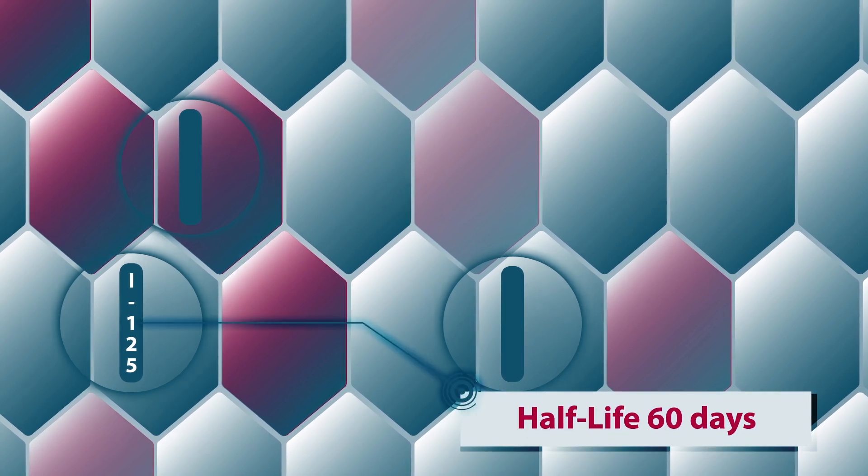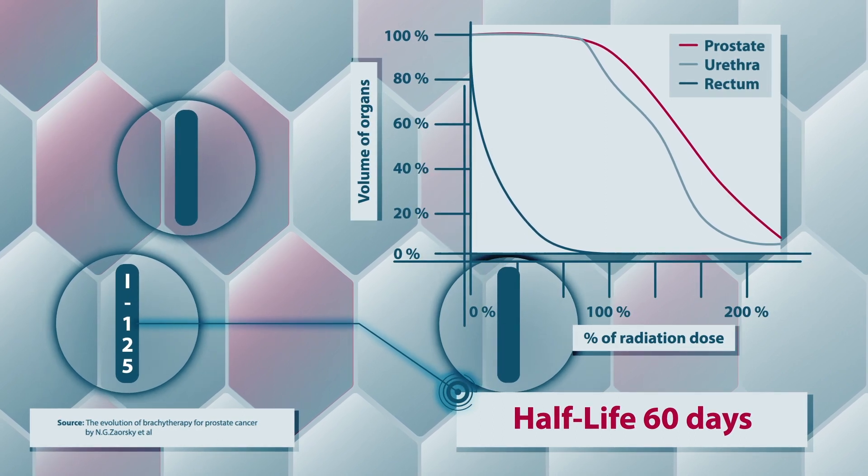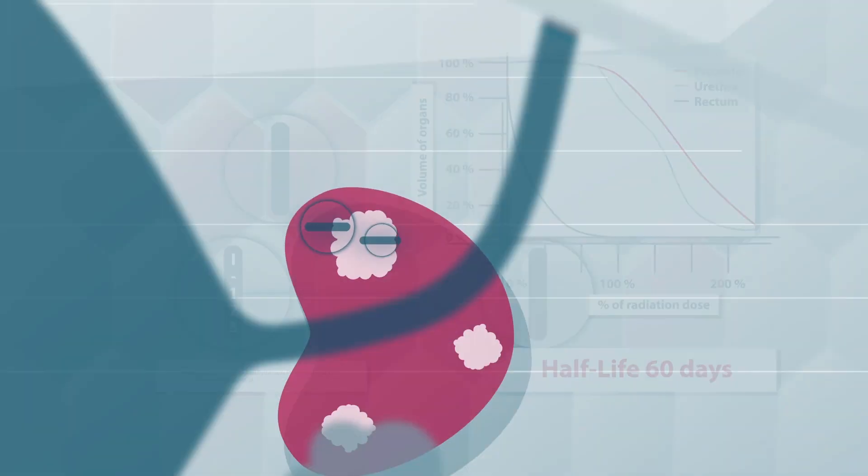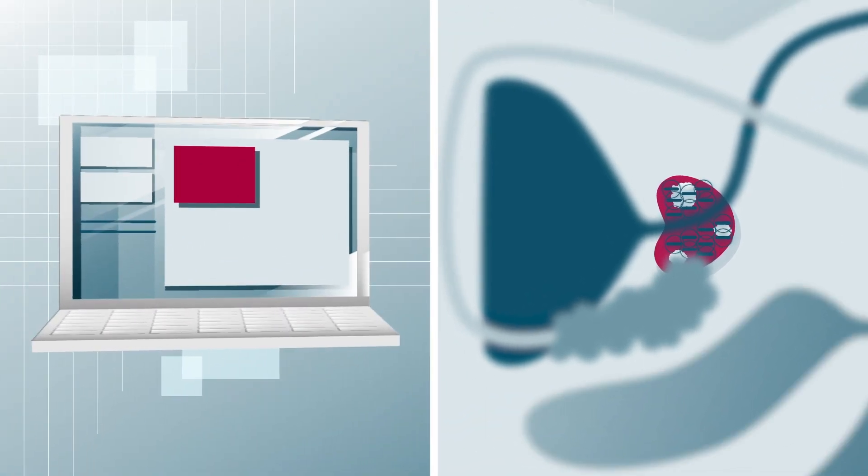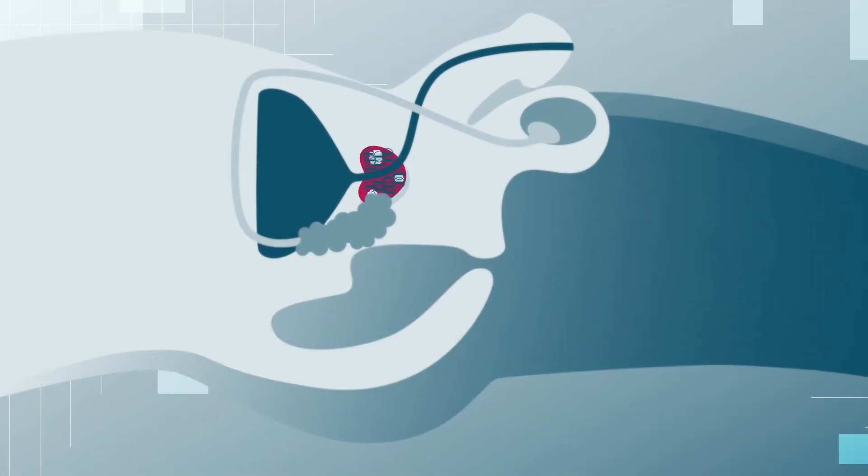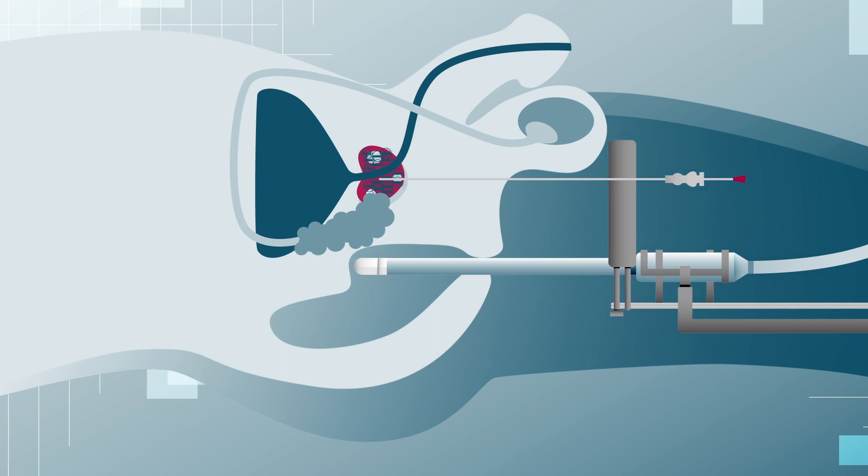The isotope iodine-125 is generally used for the seeds. It has a short half-life and emits the radiation into the surrounding tissue in low doses for a very limited time. By targetedly placing the seeds, the whole gland can be covered with the desired radiation dose. A special planning system is used to calculate the exact dose distribution. The calculation allows the treatment of the prostate while protecting the urethra, bladder and rectum as much as possible.